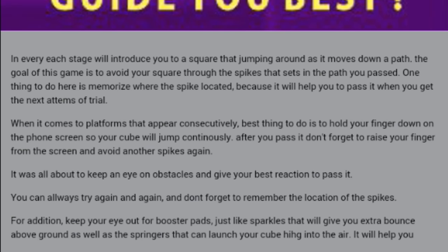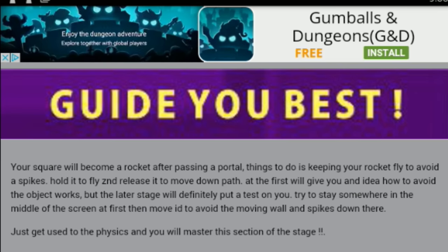'The goal of this square is to avoid your square through the spikes that sets in the path you passed. The one thing to do here is memorize when the spike located, because it will help you pass it when you get the next attempts of trial. When it comes to platforms that appear consecutively, best thing to do is hold your finger down on the phone screen so you cube will jump continuously.' Guide you best.